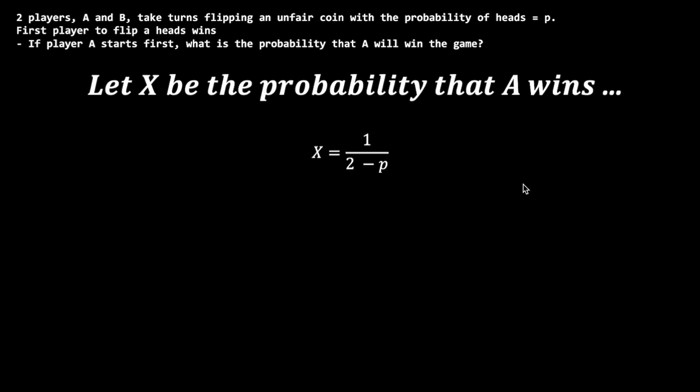Note that this result is only defined when P is between 0 and 1. Let's investigate the range of values of X. As P, the probability of heads, tends to 1 — the largest possible value — the probability of heads gets larger, and hence X tends to 1, representing the logical observation that if A gets to flip first and the coin is heavily biased towards heads, clearly A's chances of winning go up simply by flipping first.